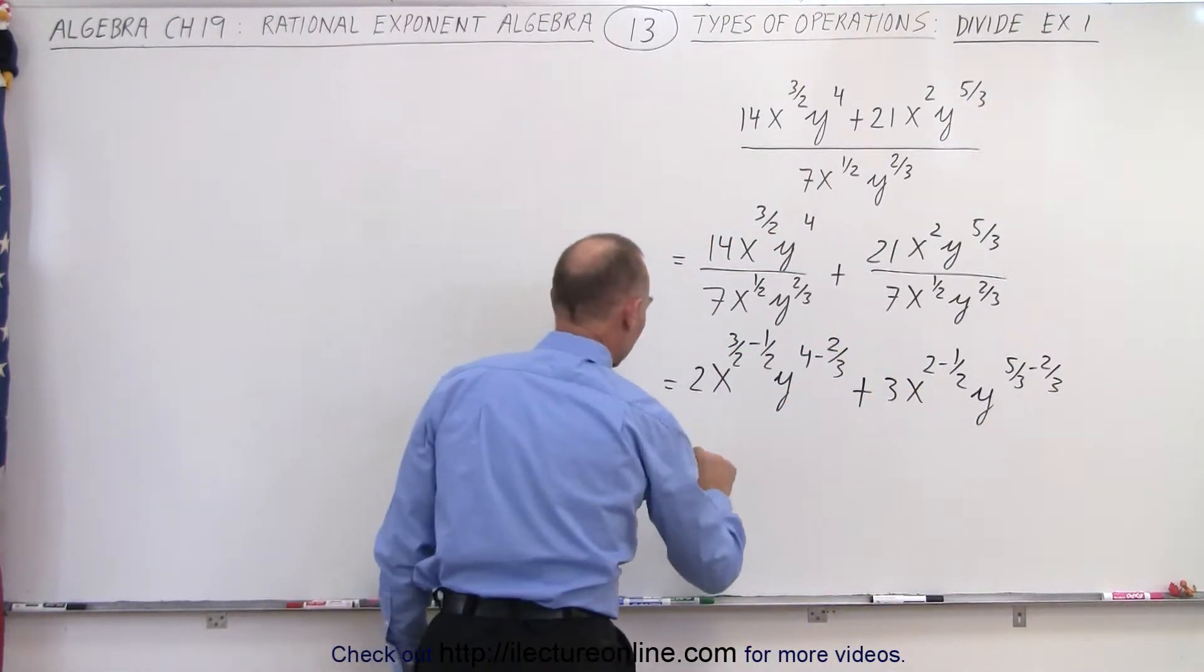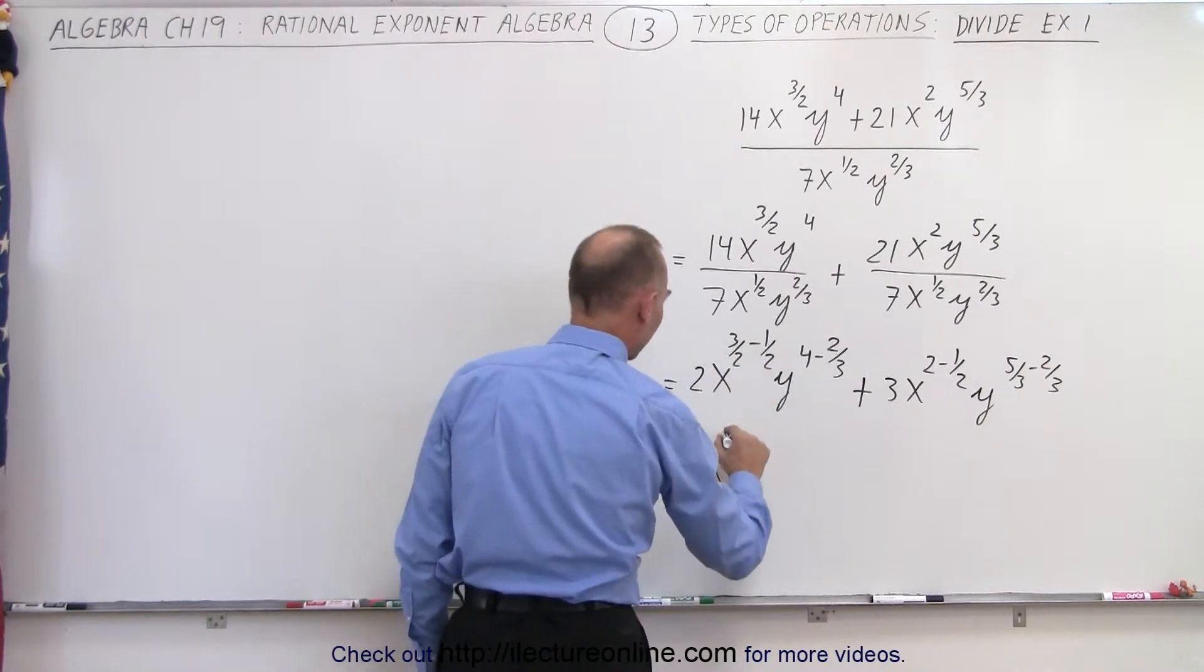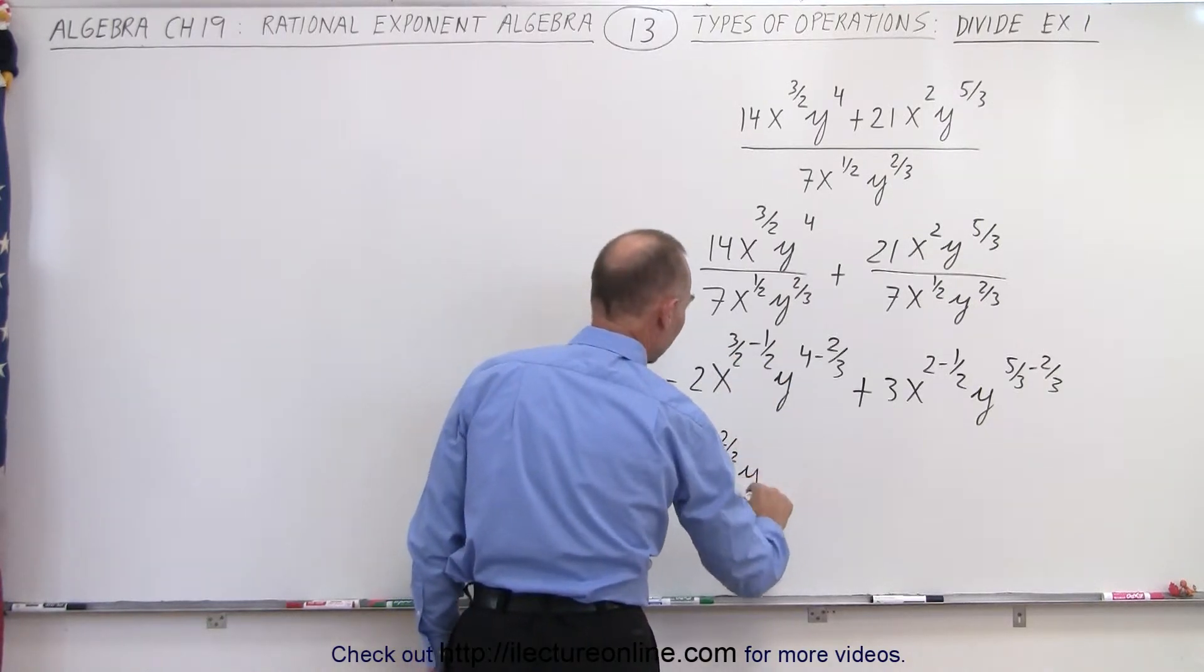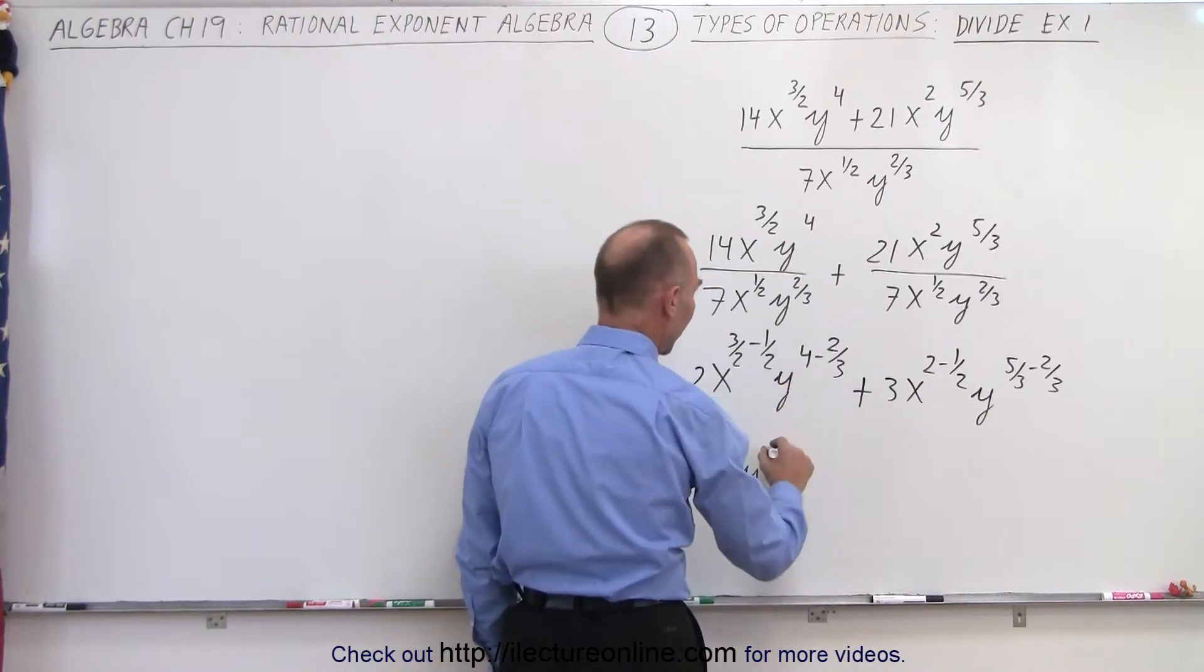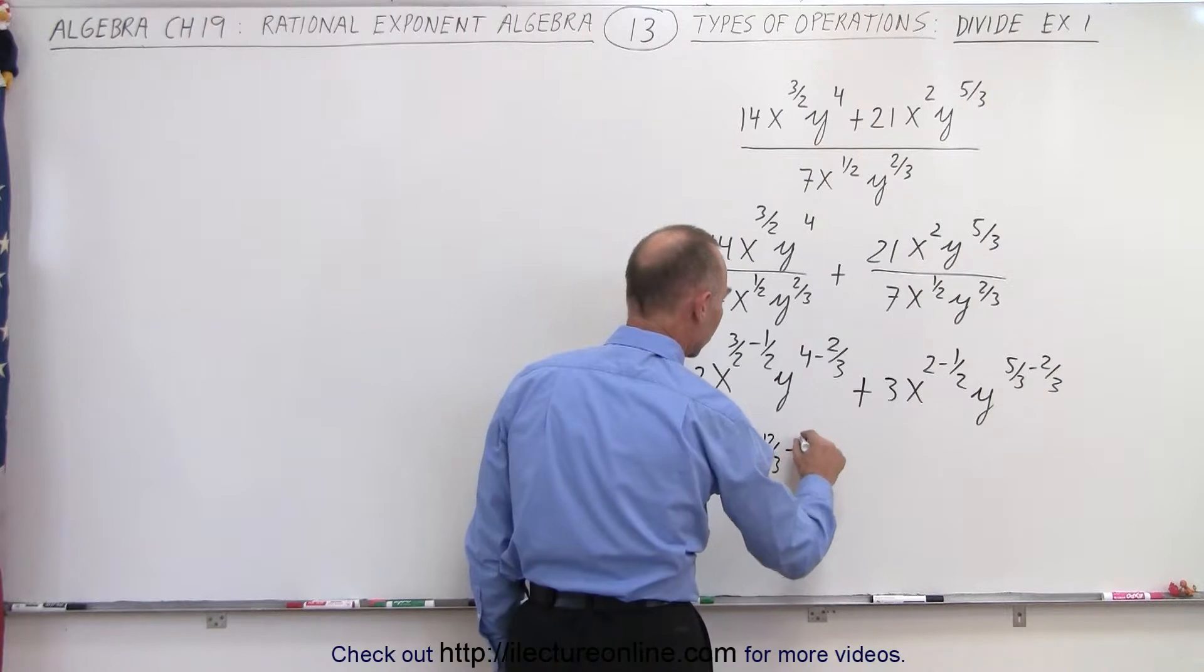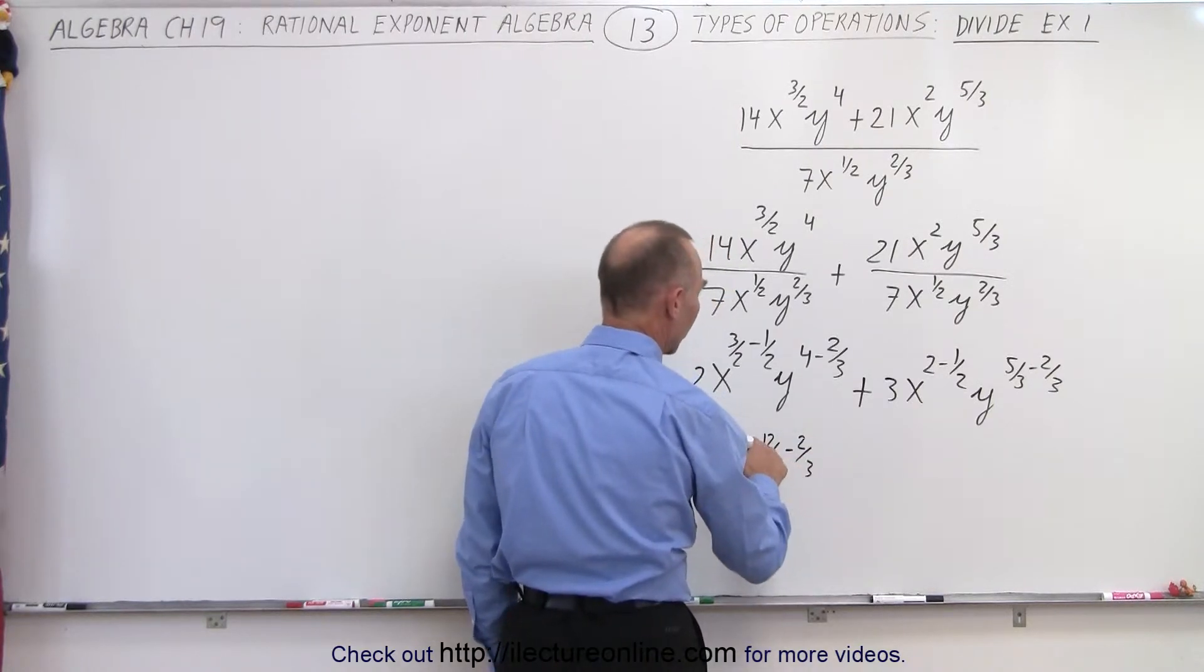So this is equal to 2x^(3/2 - 1/2), which is 2/2. y^(4 - 2/3). Well, you can write this as 12/3 minus 2/3, because 3 times 4 is 12.